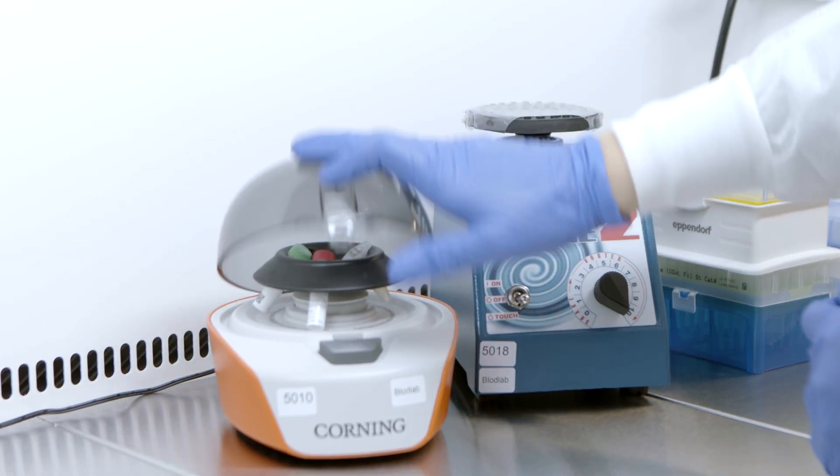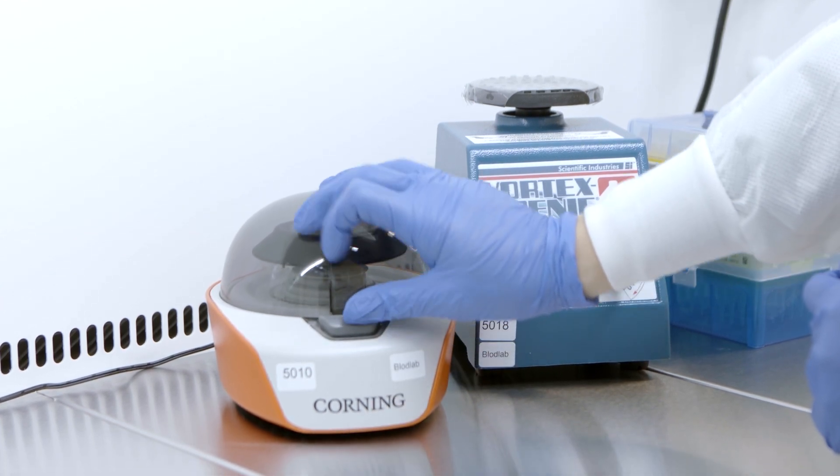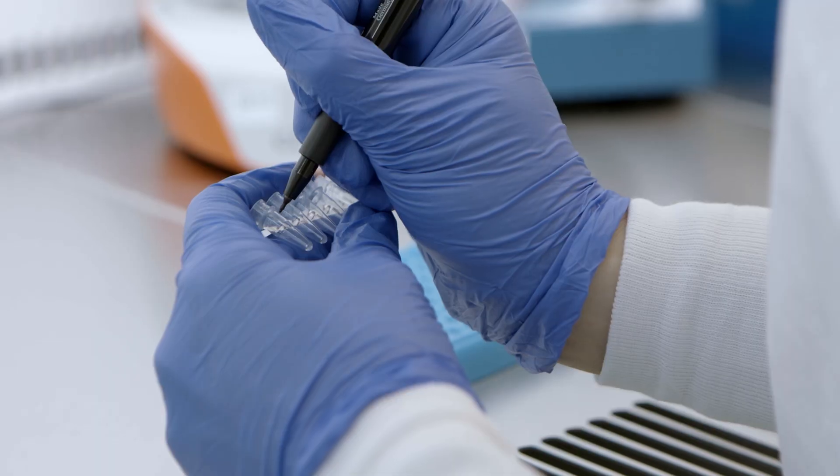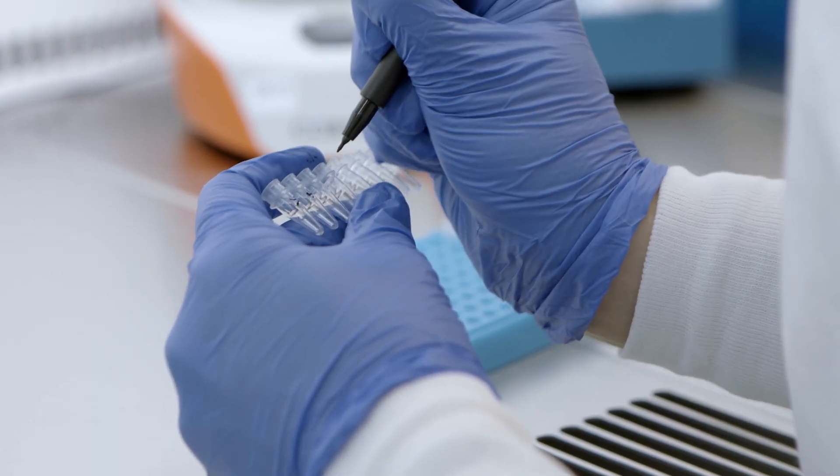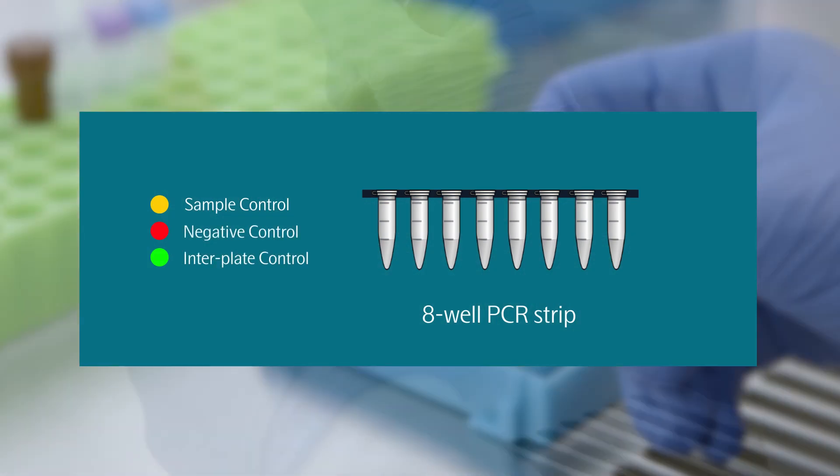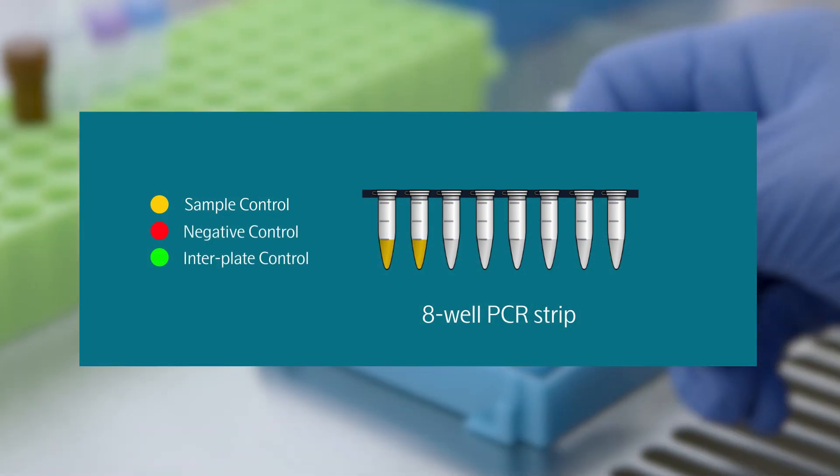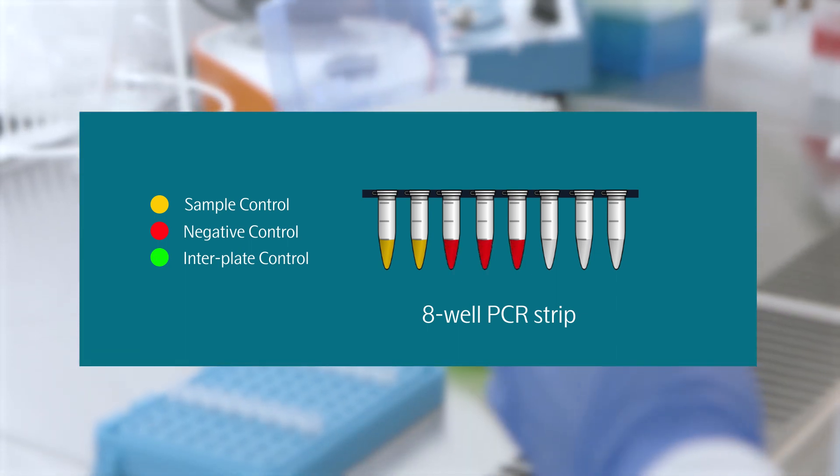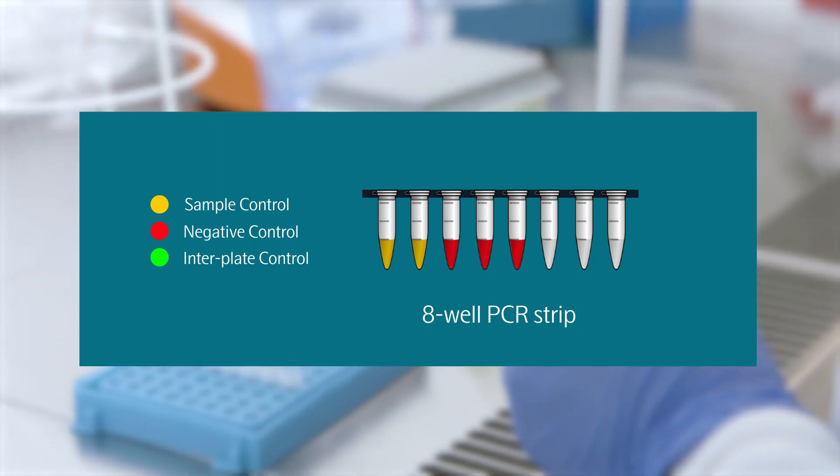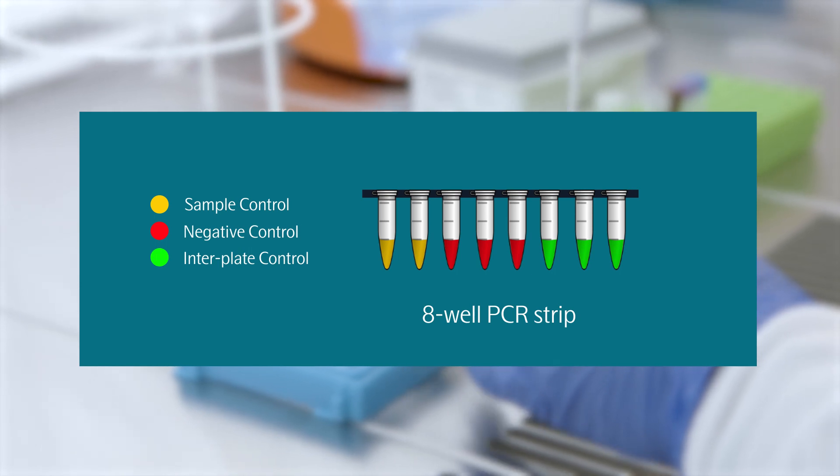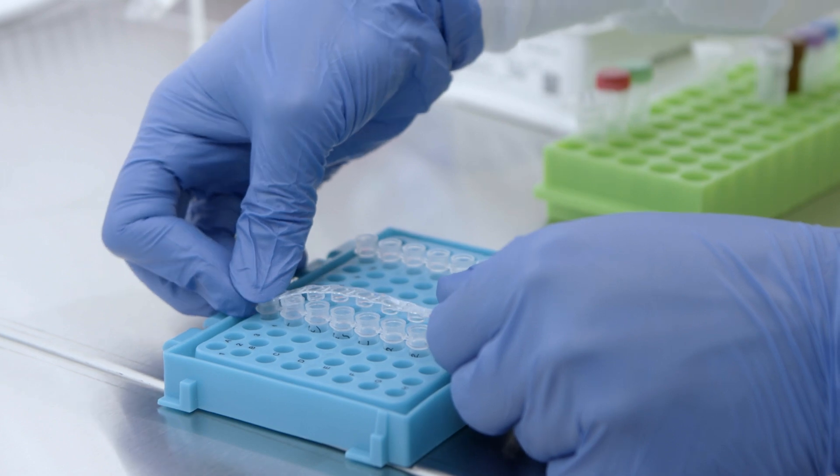Vortex the negative control, interplate control, and sample control, and spin them down briefly. Label an 8-well PCR strip with these controls according to the following order. Pipet 5 microliters of the sample controls into the first two wells, 5 microliters of the negative control into each of the next three wells, and 5 microliters of the interplate control into the final three wells of the PCR strip. Cover the strip tubes and set those aside.